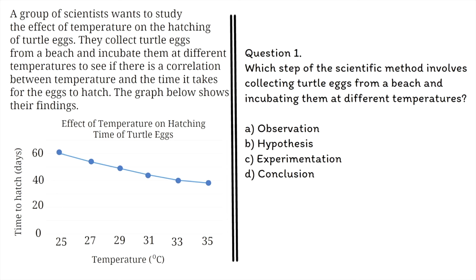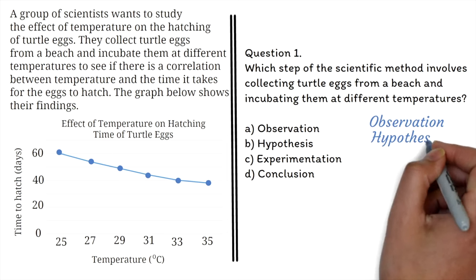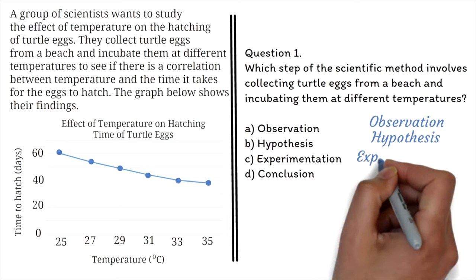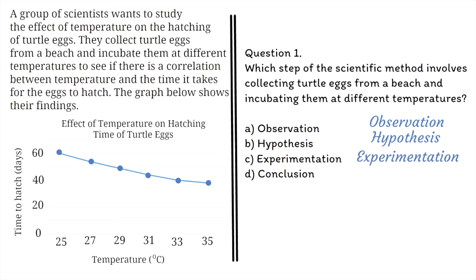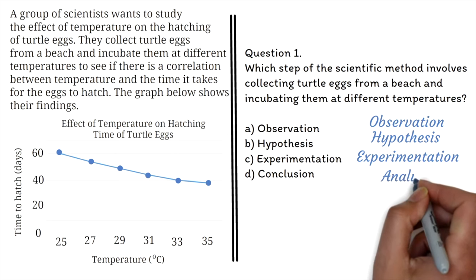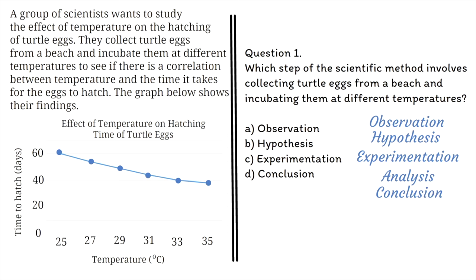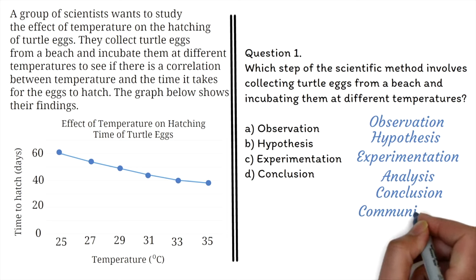The Scientific Method is a systematic approach used by scientists to investigate natural phenomena and acquire new knowledge. The method involves making observations about a natural phenomenon, forming a hypothesis — that is formulating a testable explanation or prediction based on the observations — designing and conducting experiments to test the hypothesis, analyzing and interpreting the data obtained from the experiments, and drawing a conclusion based on the results. Please note that there are different variations of these steps, but the idea is always the same. The most common one is the addition of communication as the last step.